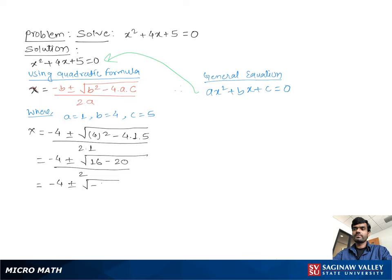Then we can write negative 4 plus minus square root of negative 1 times square root of 4 over 2. Because square root of negative 1 times square root of 4 gives us square root of negative 4. Then we can write negative 4 plus minus i times 2, since square root of 4 is 2, where i denotes square root of negative 1, over 2.